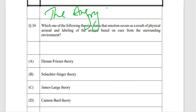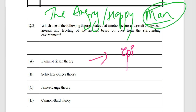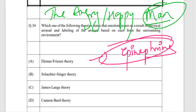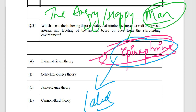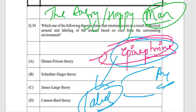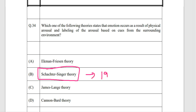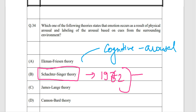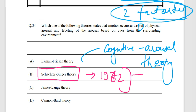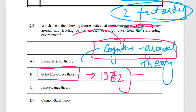Schachter and Singer's 1962 experiment — sometimes called the 'angry/happy man' experiment — involved injecting subjects with epinephrine. Subjects would then label their arousal as happy or angry based on context. This is also called the cognitive arousal theory: cognition refers to the labeling and arousal is the physical component. Option B is the right answer.